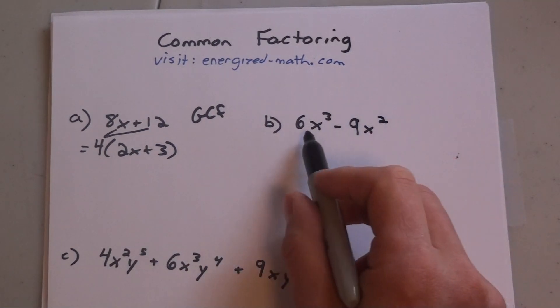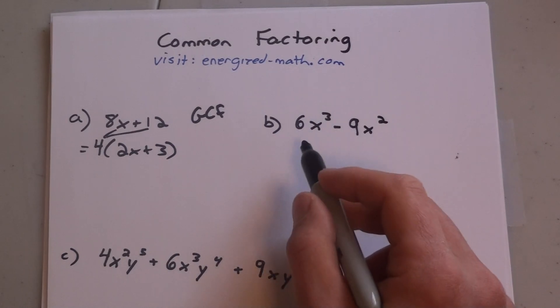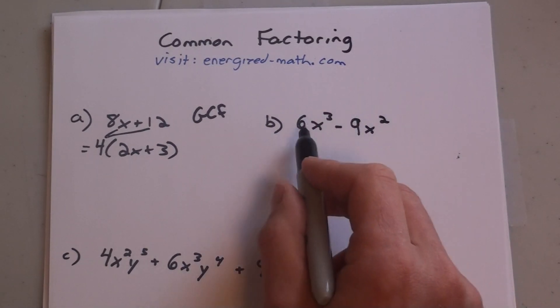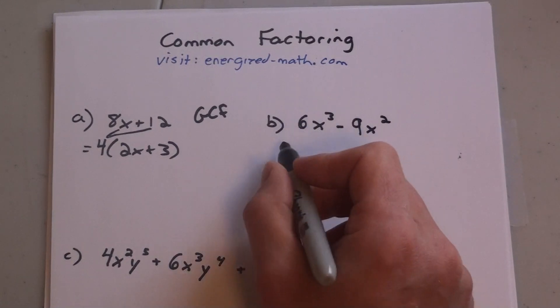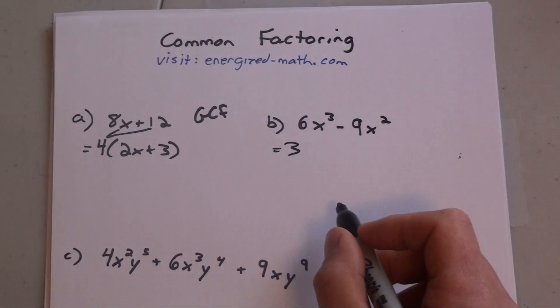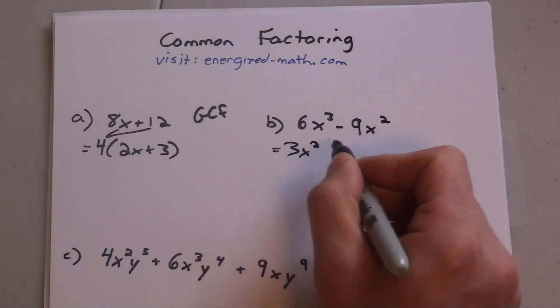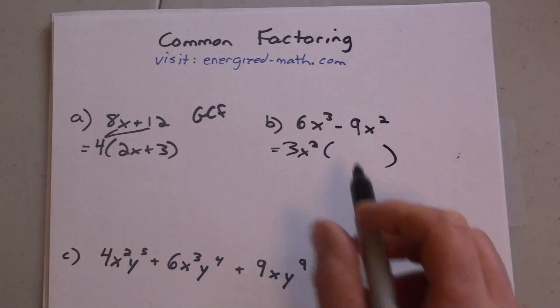For the second term, you're going to have coefficients and exponents you can divide out from both terms. So 6x³ minus 9x², I can divide a 3 out from both of them, but I can also take an x² out. When you're dividing, you subtract your exponents.